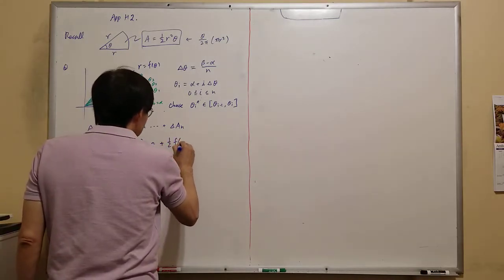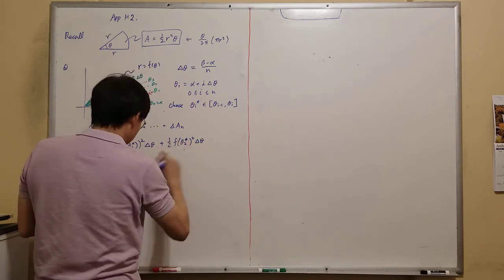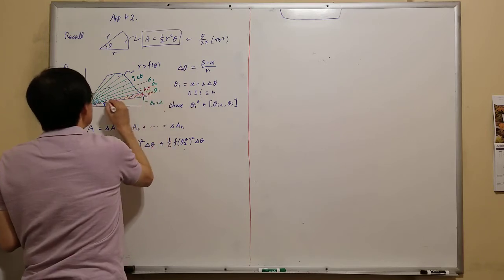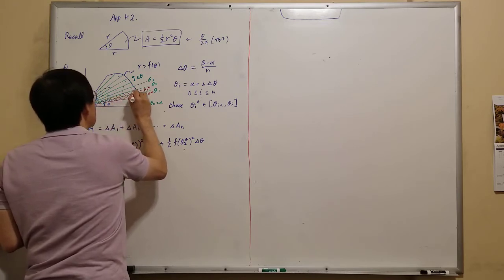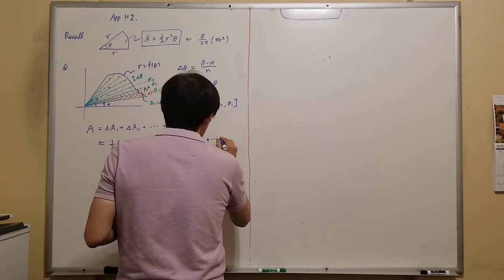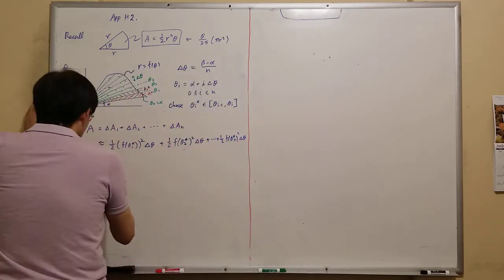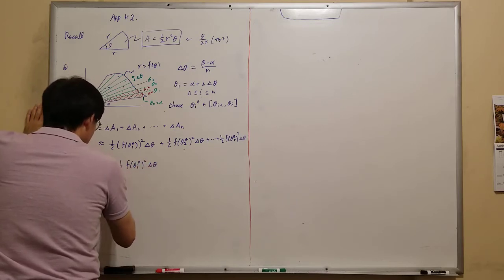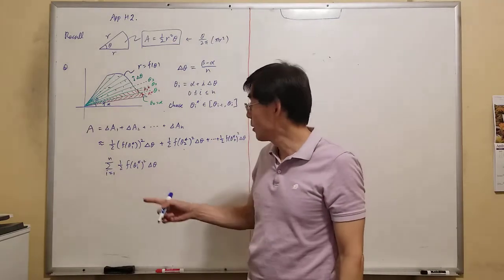Likewise, for each subsequent sub-interval we choose θ₂*, θ₃*, and so on, and approximate each sub-region with one half f(θᵢ*)² · delta theta. Summing all these gives a total approximation: the sum of one half f(θᵢ*)² delta theta, which is exactly a Riemann sum of the function one half f(θ)².